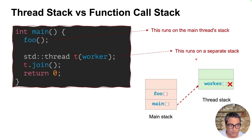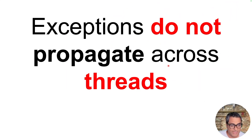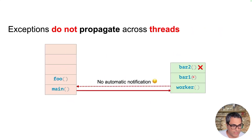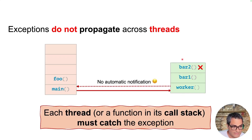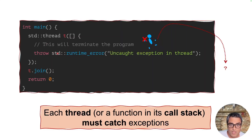What does this mean when it comes to catching exceptions? Exceptions do not propagate across threads. So if this is my main call stack and this is my worker call stack, if the worker calls a bunch of other functions and one of them throws, the exception only propagates inside the worker's call stack and will not propagate to the main call stack. Although main launched this thread, it will not be notified if an exception happens. So each thread or function in its call stack must catch the exception — otherwise, std::terminate will happen and your program will get terminated.